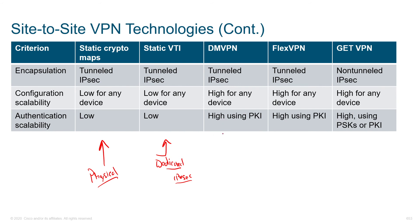If you're trying to achieve full mesh but don't want the management headache, we can leverage Dynamic Multipoint VPN — DMVPN. It's really, really smart: it leverages the hub to do lookups for network information at the other hosts and can dynamically create spoke-to-spoke tunnels. This is almost like full mesh on demand.